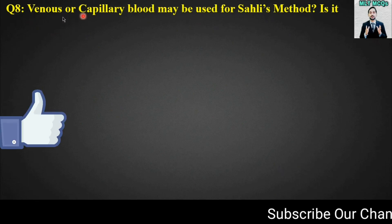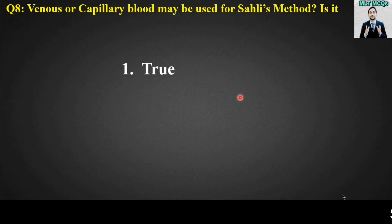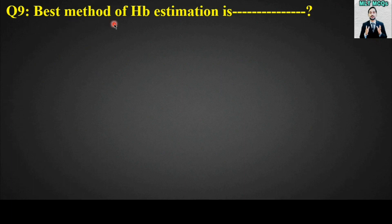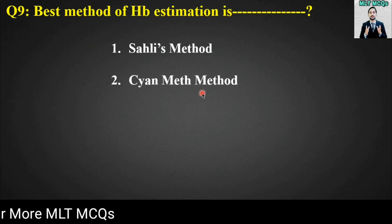MCQ number eight: Venous or capillary blood may be used for Sahli's method — is it true or false? The right answer is option number one — yes, this is true. Venous or capillary blood may both be used for Sahli's method.